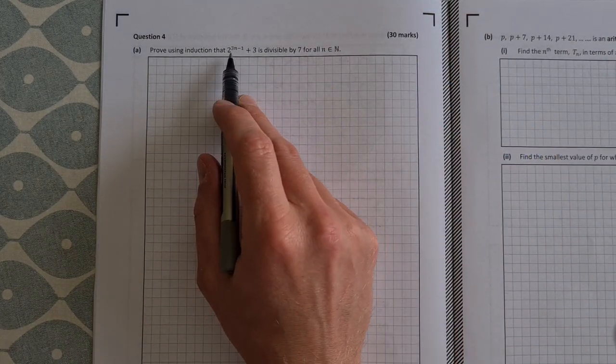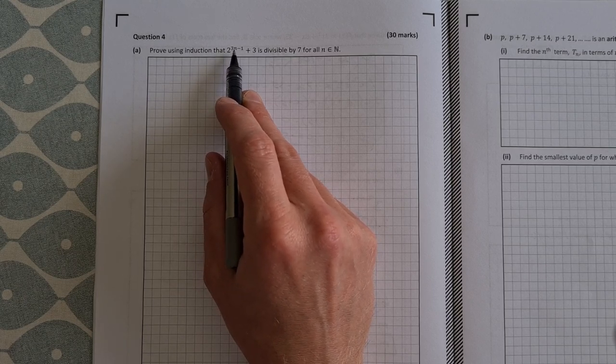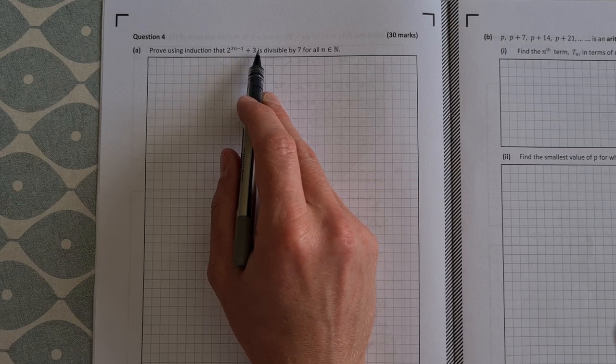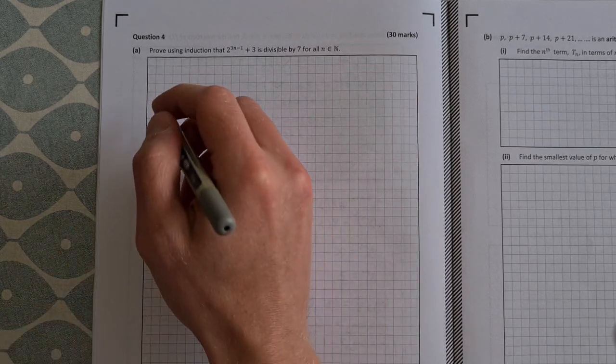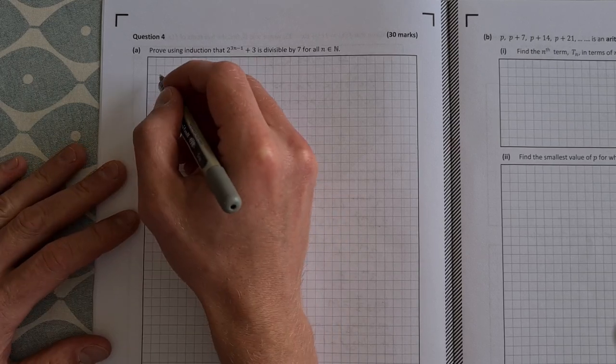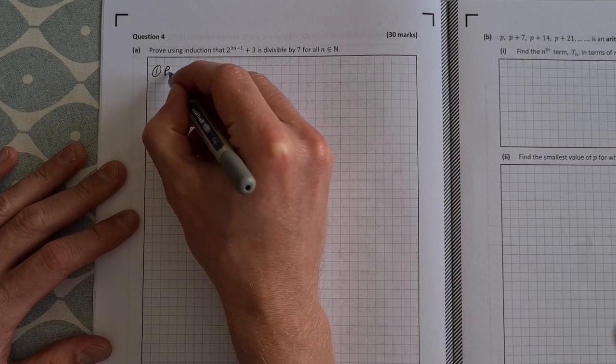So we have to prove using induction that 2 to the power of 3n minus 1 plus 3 is divisible by 7 for all n element of N. So for proof by induction we start off always with step 1 which is to prove true for n equal to 1.